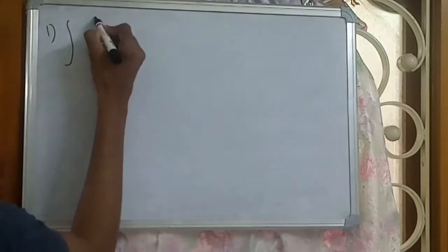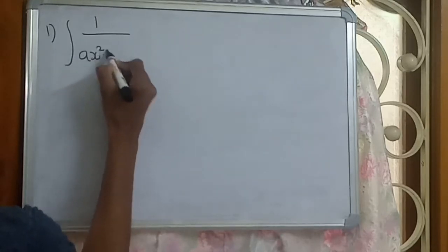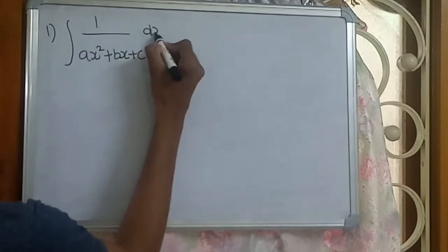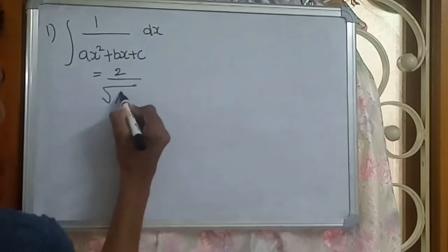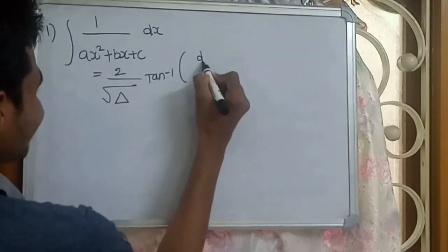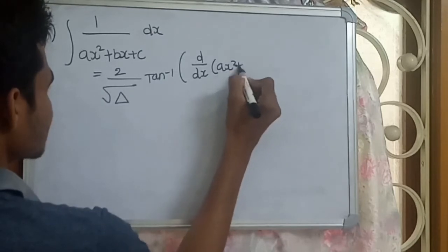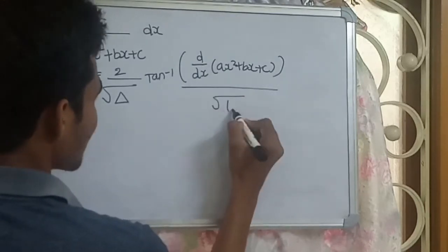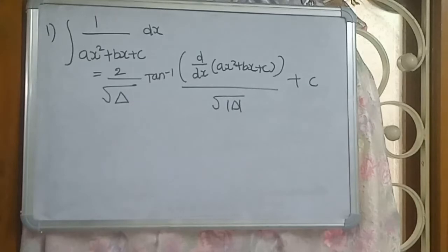Hi guys, welcome to my channel. In this short video, we cover the integration of 1 by Ax squared plus Bx plus C. The first formula equals 2 by root modulus of delta times tan inverse of the derivative of Ax squared plus Bx plus C by root modulus of delta, plus C.